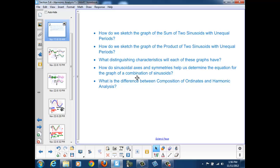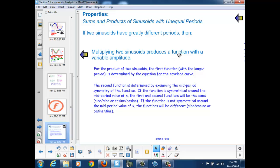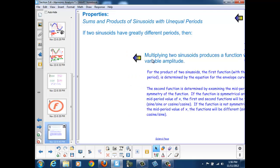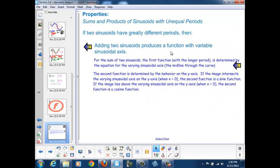What distinguishing characteristics will each of these graphs have? Well, the product of two functions will produce a function with a variable amplitude, and the sum will produce a function with a variable sinusoidal axis.